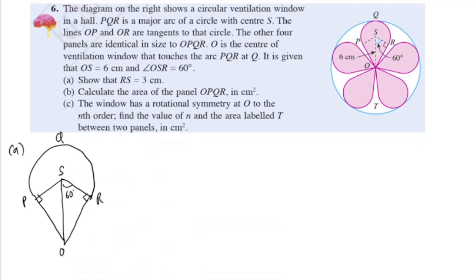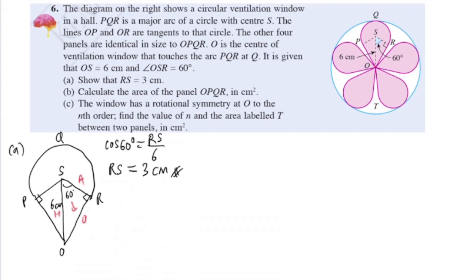Using SOHCAHTOA on the right angle triangle: OS is the hypotenuse (6 cm), RS is the adjacent side, and the angle is 60 degrees. So cos 60 equals RS divided by 6. Using your calculator in degree mode: RS equals cos 60 times 6 equals 3 cm. That's how we show RS equals 3 cm.